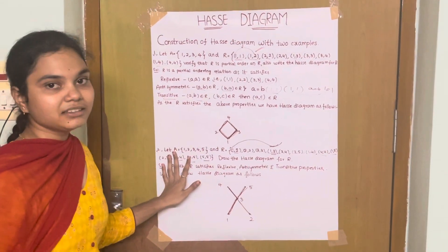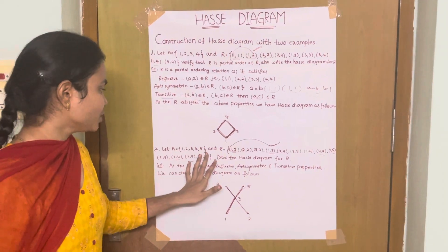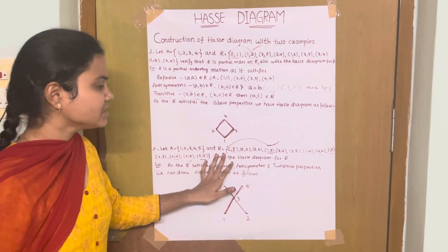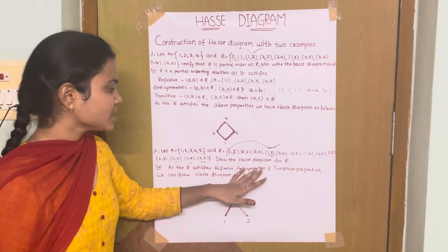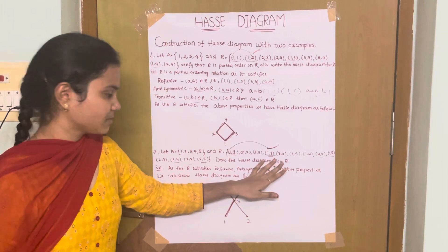Let us take another example. A contains elements 1, 2, 3, 4, 5 and R is the relation defined in such a way. Then draw the Hasse Diagram for R.